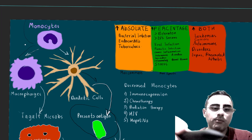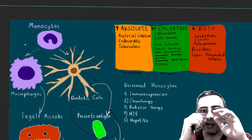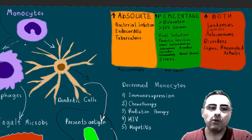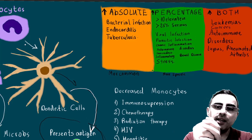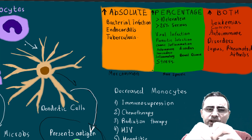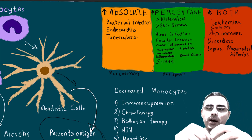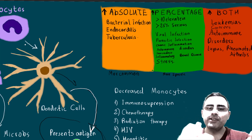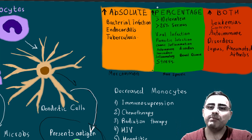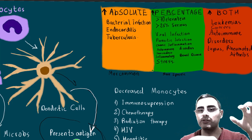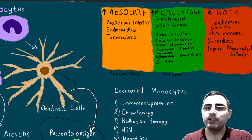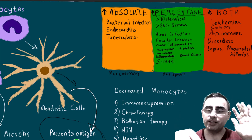So monocytes differentiate into macrophages and dendritic cells. Now let's talk about what elevation of monocytes in the blood means. Elevation can be absolute — meaning the total number of monocytes in the blood is elevated, not compared to other cells. Or it can be a percentage elevation, meaning the total number of monocytes may be normal but their percentage relative to other white blood cells is elevated.